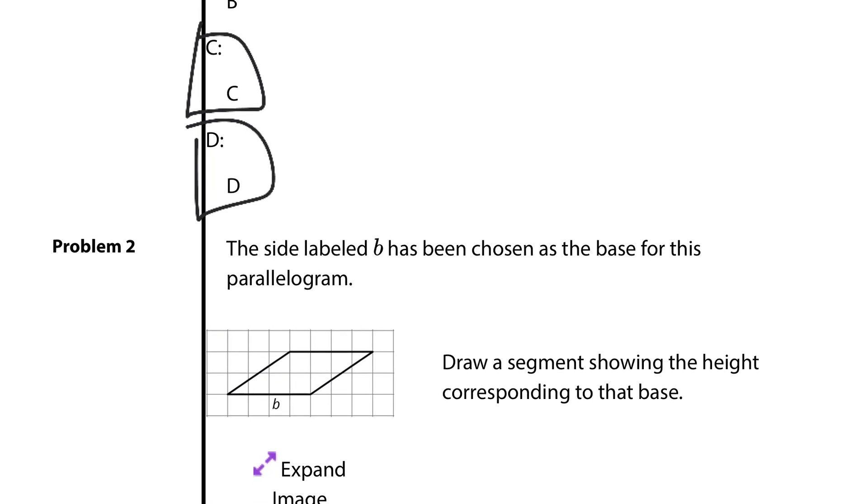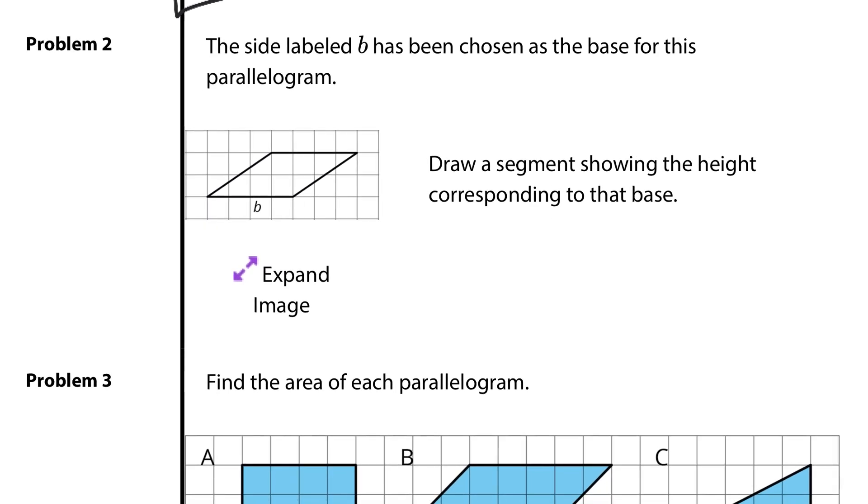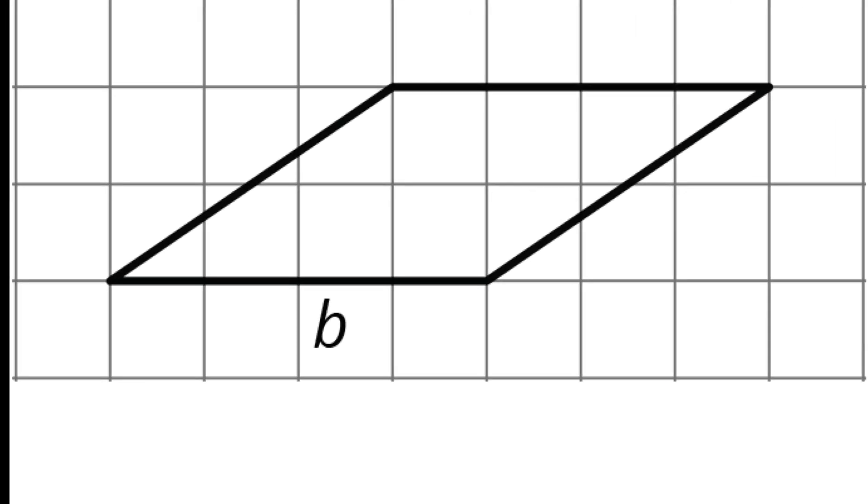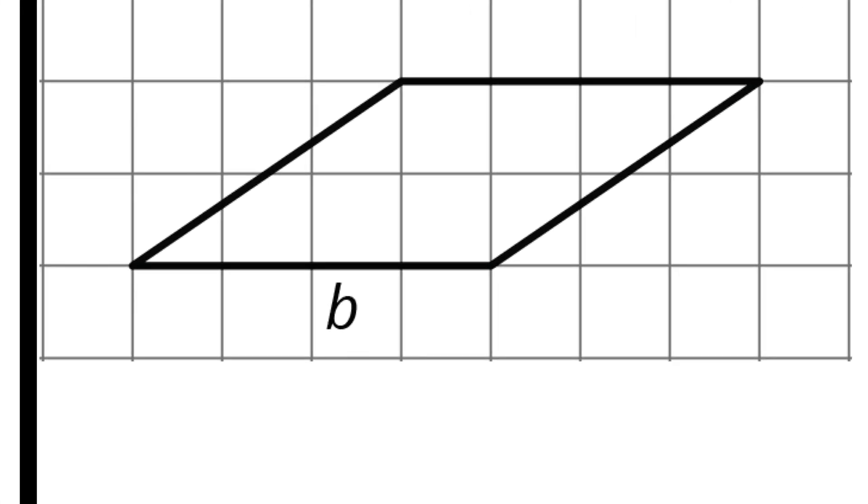Question two. This side labeled B has been chosen as the base for this parallelogram. Draw a segment showing the height corresponding to that base. You have a lot of different options here. You could draw a line in here, right here, because that meets at a right angle, and label it height. You could draw an extension out here, and label a right angle there, and call it height.